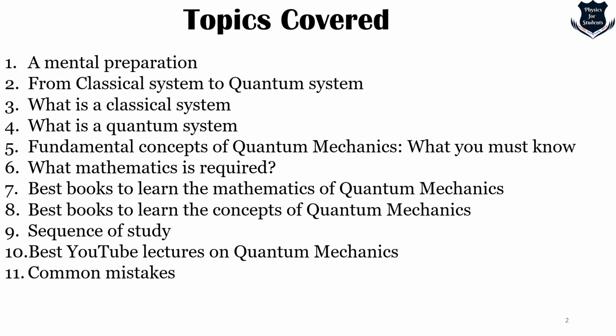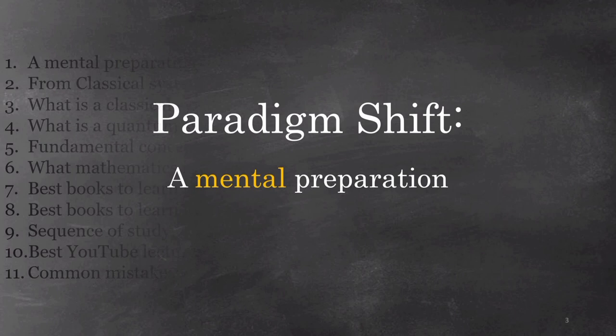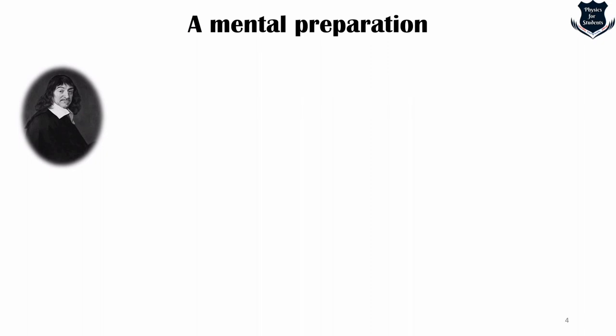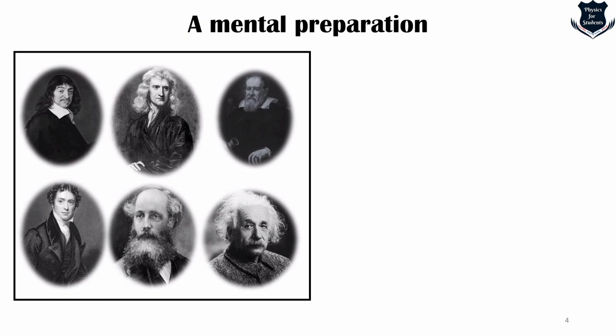We'll be covering many important topics, building up the fundamental concepts and then moving ahead from there. First, I want to discuss what is called a paradigm shift and the mental preparation needed to move into quantum mechanics. When I say mental preparation, consider the old classical system starting with Descartes, who formed the Cartesian coordinate system, then Newton, Galileo, Faraday, Maxwell, and Einstein — all these classical physicists define the classical world.